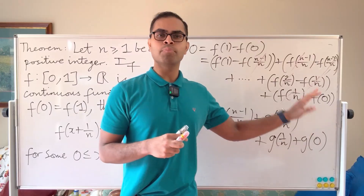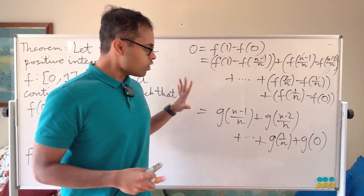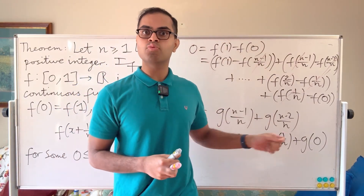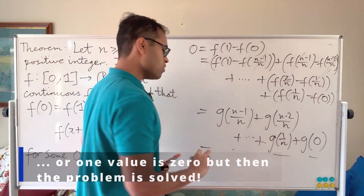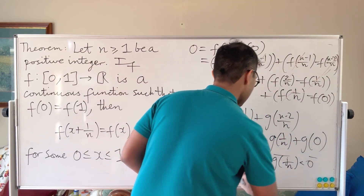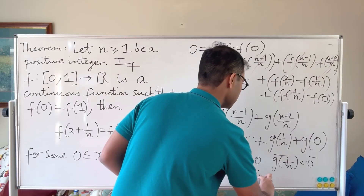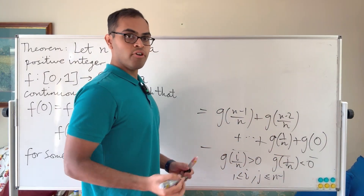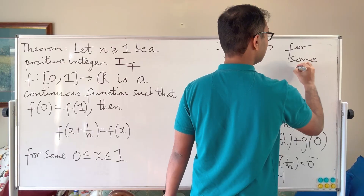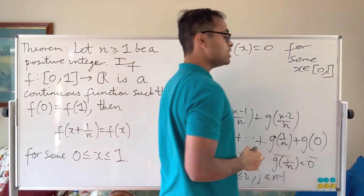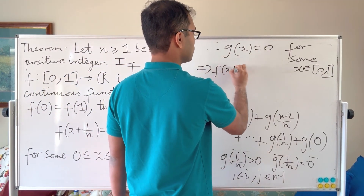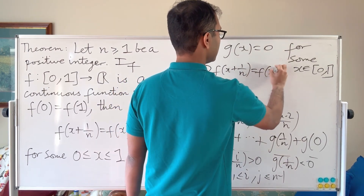So what does that tell us? All of them can't be positive, because then their sum would be positive; and all of them can't be negative, because their sum would be negative. Therefore, at least one has to be positive and at least one has to be negative: g(i/n) > 0 and g(j/n) < 0 for some i and j with 1 ≤ i, j ≤ n−1. By the intermediate value theorem, since g is continuous, g(x) = 0 for some x in [0,1], meaning f(x + 1/n) = f(x).